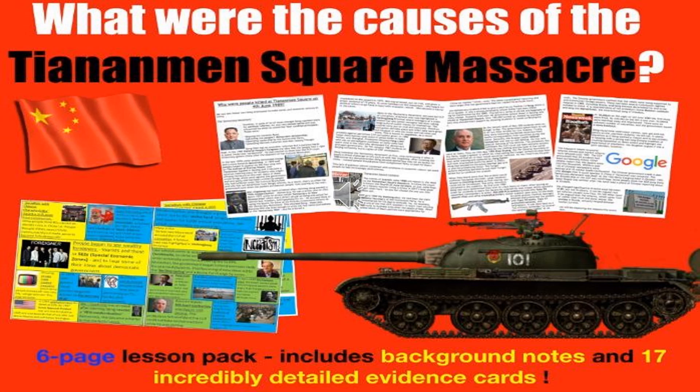Students read through the detailed background information before arranging 17 extremely detailed and precise information cards into factors — economic, cultural, and things related to people. This activity helps students scaffold a response to the key question, which can then be used as the basis for a piece of assessed or extended written work.